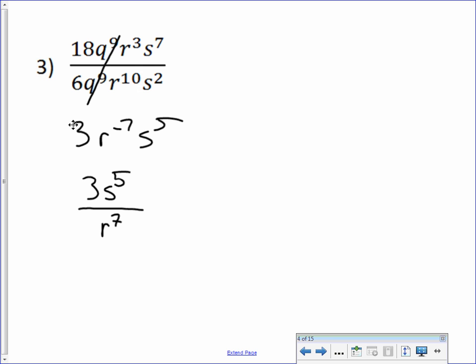So we would write this as 3 times s to the 5th over r to the 7th. Some of you just can visualize and say, hey, there's 3 r's on top, there's 10 r's on the bottom, so the difference, the 7, will end up on the bottom. Whichever way makes more sense to you, as long as you get this as your final answer.